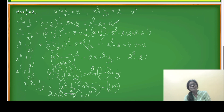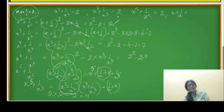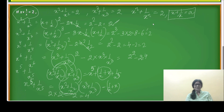We found that if x plus 1 over x is equal to 2, then x to the power n plus 1 over x to the power n is always 2. In the next video, we will check whether if x plus 1 over x is something else, can we get this type of pattern or not. Thank you for watching, keep on watching.